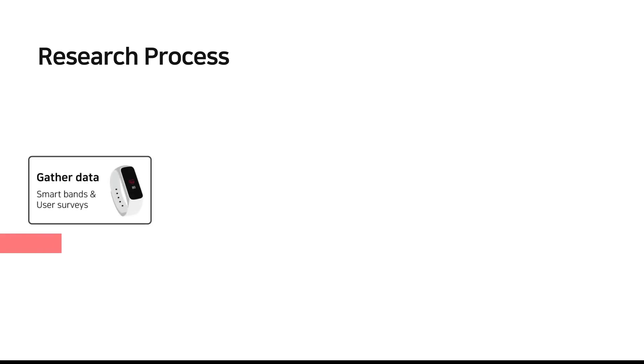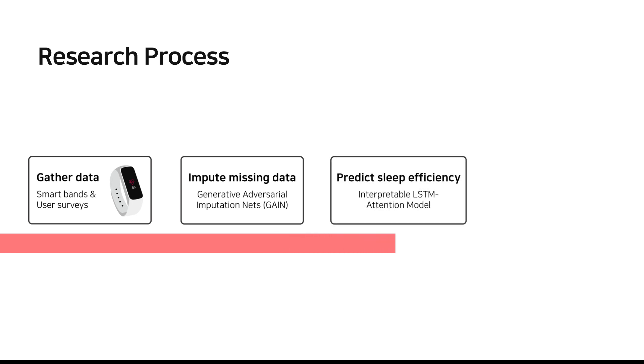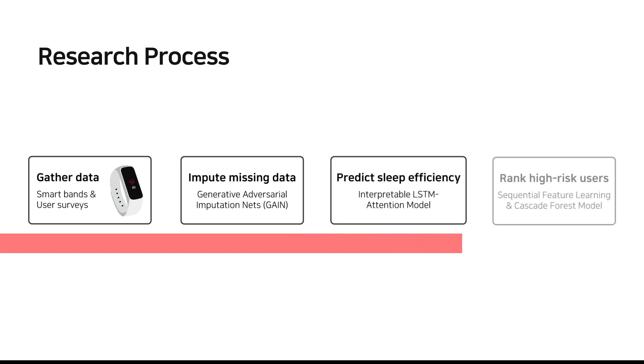There were four steps to the research structure: gathering data, imputing missing data, predicting sleep efficiency, and ranking potential high-risk users.